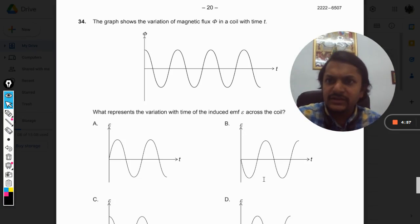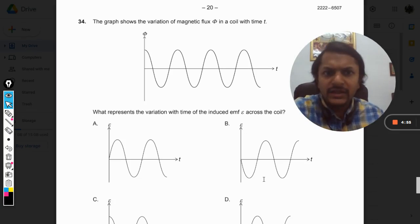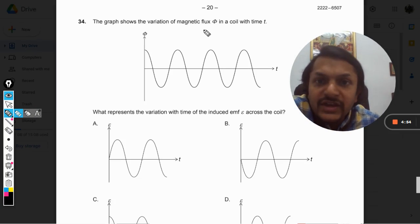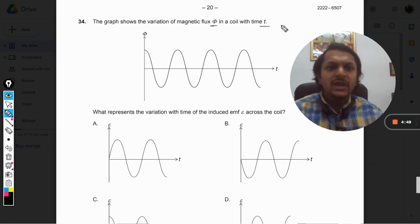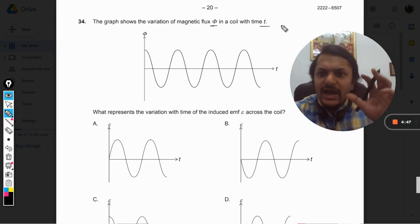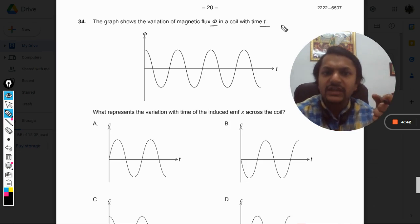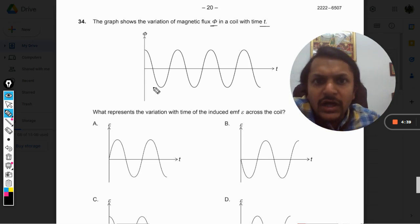Okay dear students, let us see what is there in this question. The graph shows the variation of magnetic flux phi in a coil with time t. What represents the variation with time of the induced emf e across the coil?